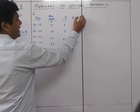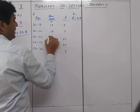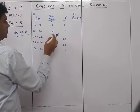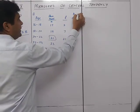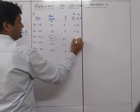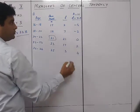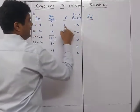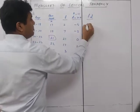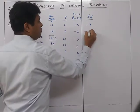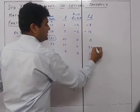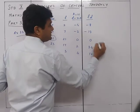Using the shortcut method: D = x − A, where A = 21. So D values are: 17−21 = −4, −2, 0, 2, 4. Then FD = F × D gives: −8, −14, 0, 34, and 12.